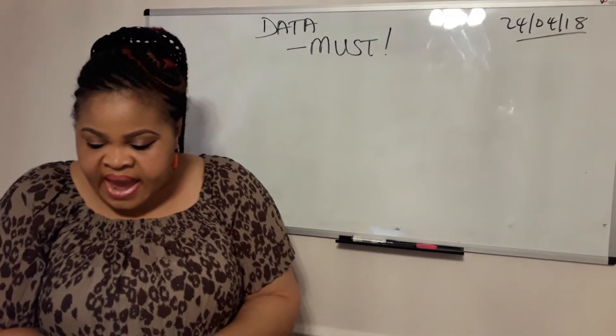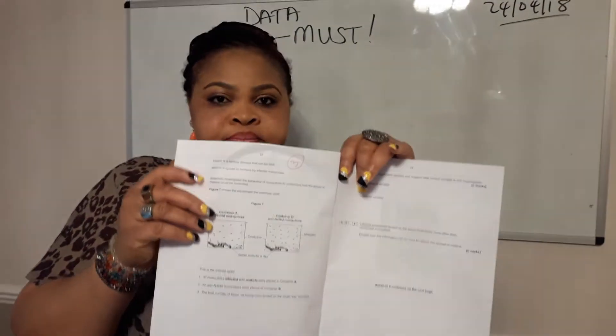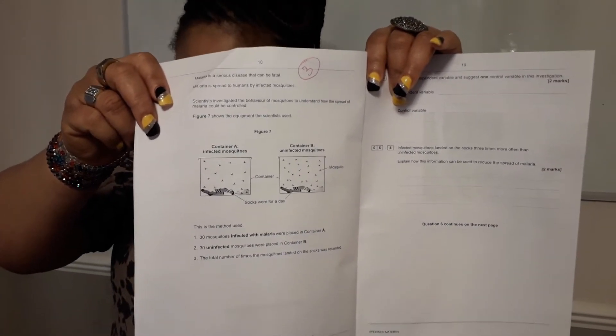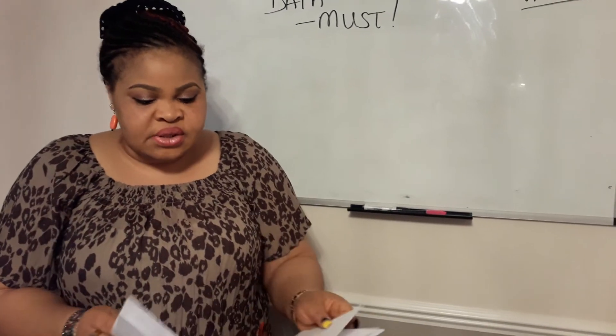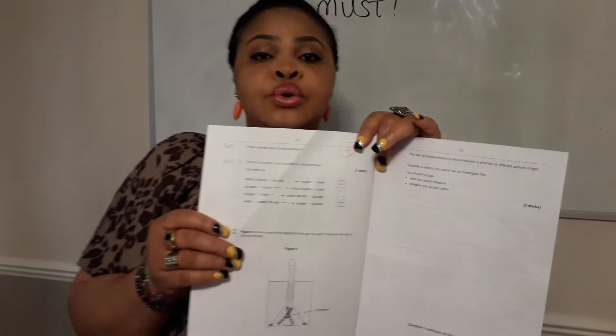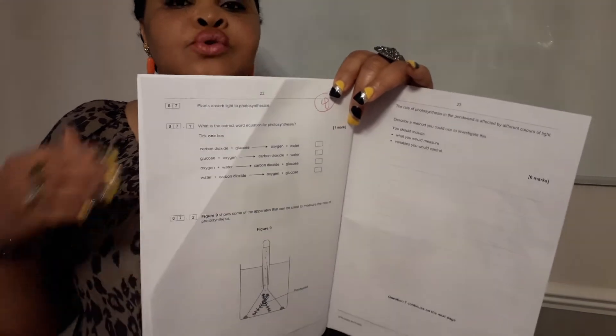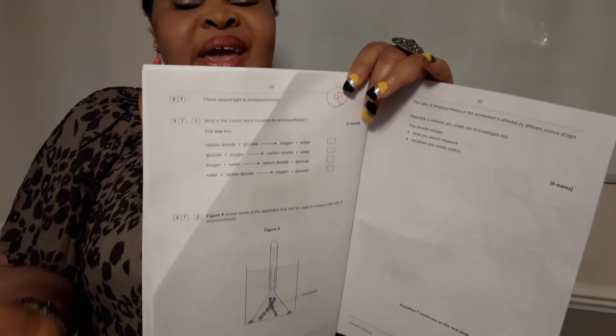On page 18, there is another data question. The data question that starts from page 18 is a total of seven marks. Get it, seven solid marks by just looking at the data and using it to answer the question. And then I've got two more on page 22. This is an experiment on photosynthesis, how photosynthesis can be carried out, or they said a student carried out the photosynthesis. It has to do with data as well.